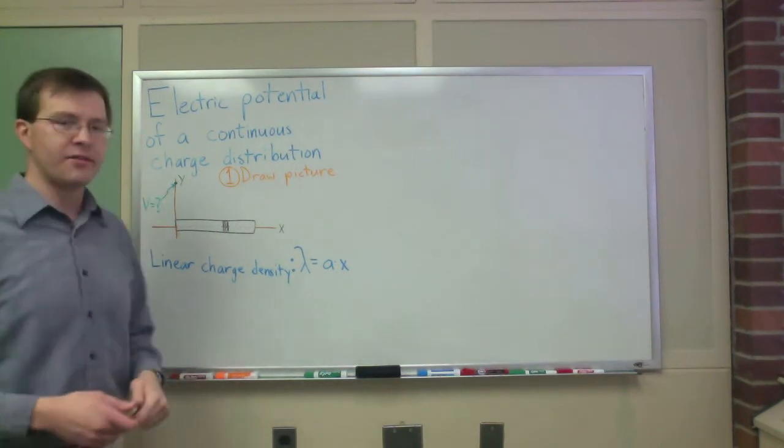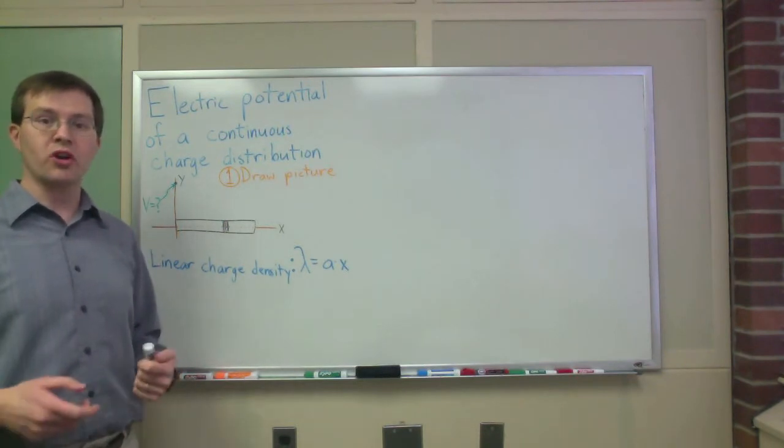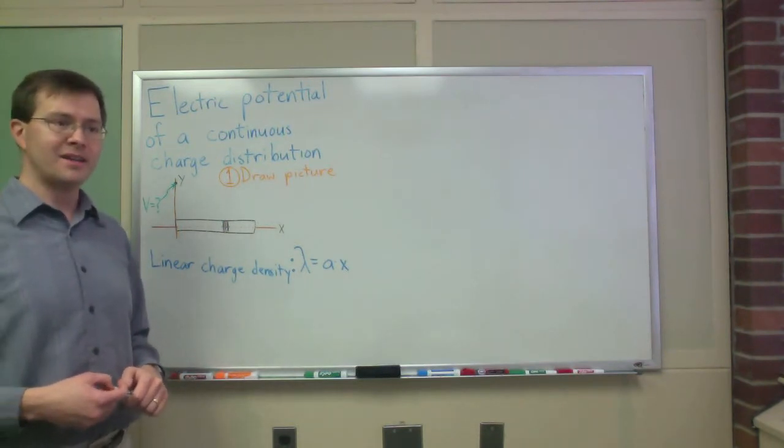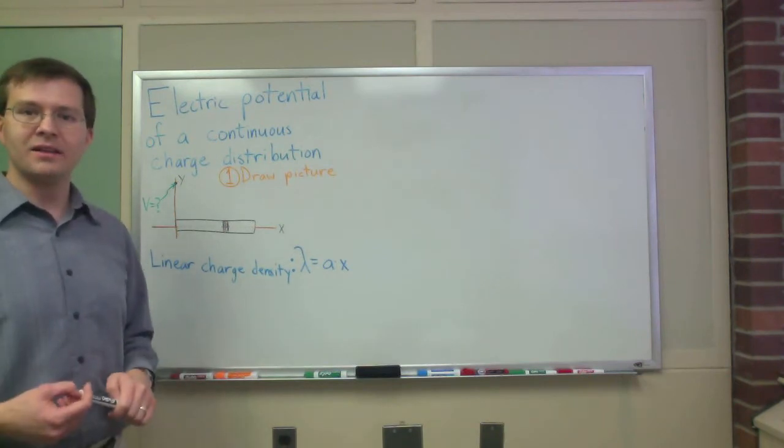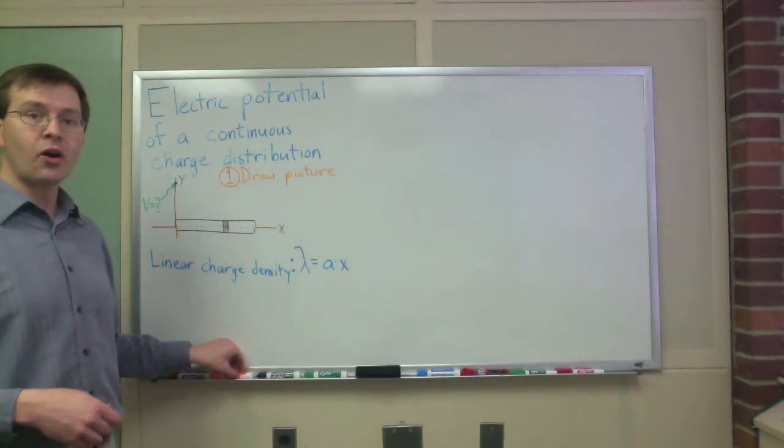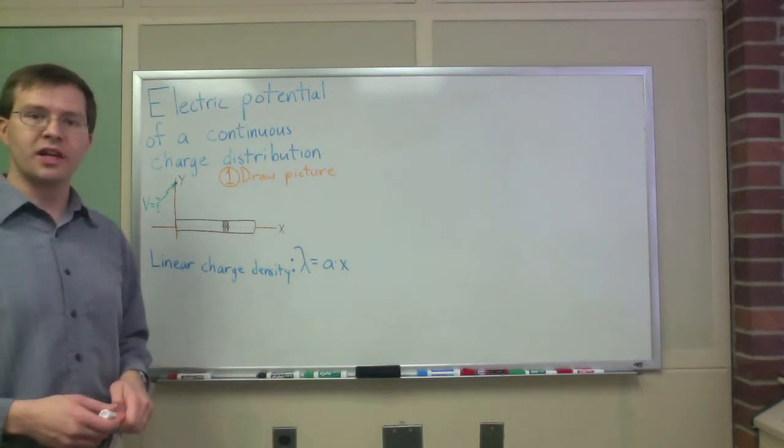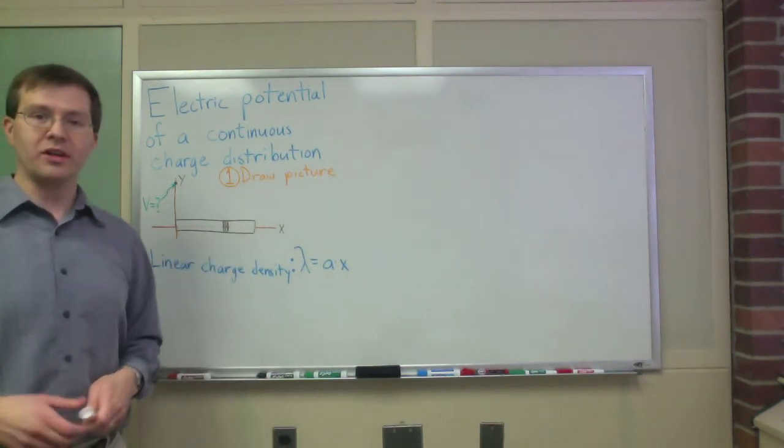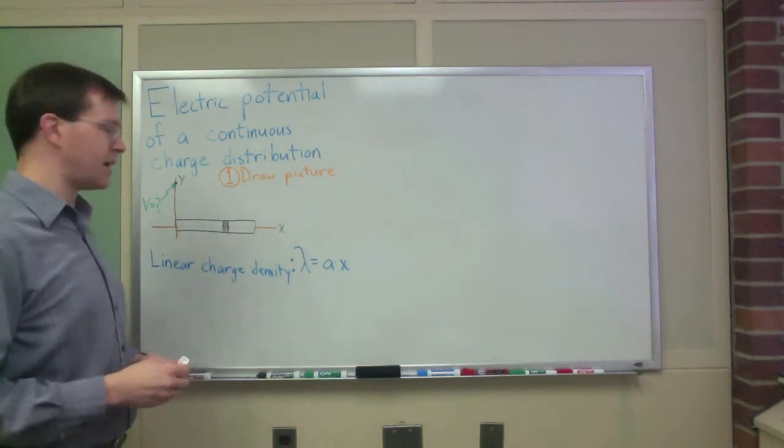To do this, we're going to have to do a continuous charge distribution problem. This is for potential, not for electric field, but a lot of the rules are the same in both cases. I'll go through the steps that I always use to solve this kind of problem. Step one is to draw a picture. Yay! We did that. So step one is done.